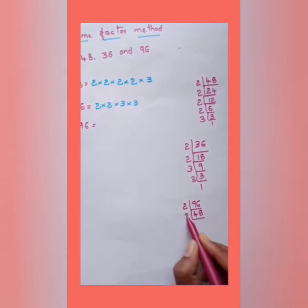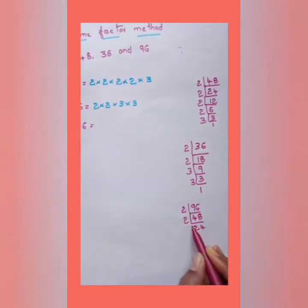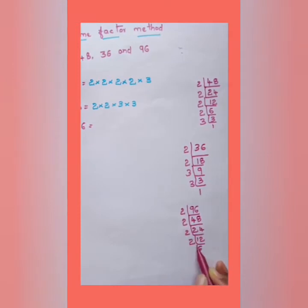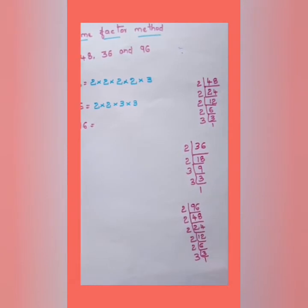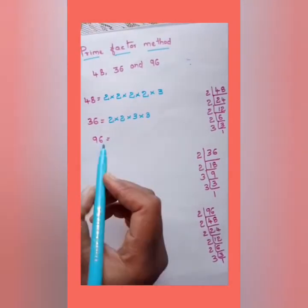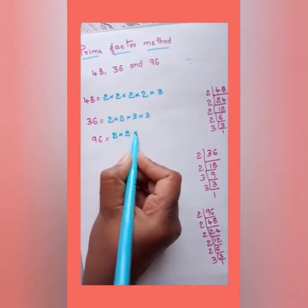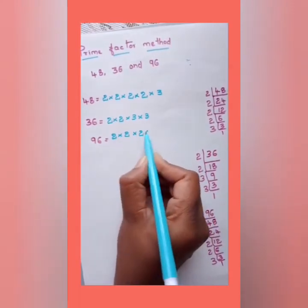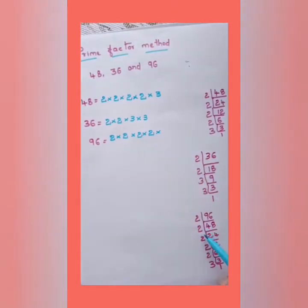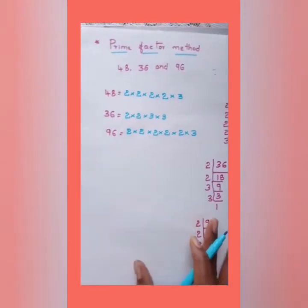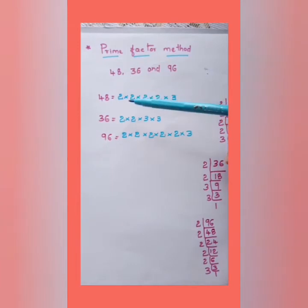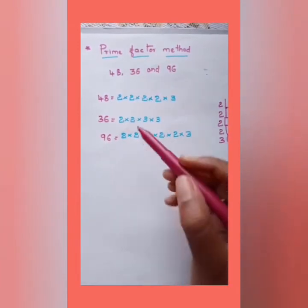For 96: divide by 2 repeatedly — 96 ÷ 2 = 48, 48 ÷ 2 = 24, 24 ÷ 2 = 12, 12 ÷ 2 = 6, 6 ÷ 2 = 3, 3 ÷ 3 = 1. So the prime factors of 96 are 2 × 2 × 2 × 2 × 2 × 3. Now check which prime factors are common across all three numbers.